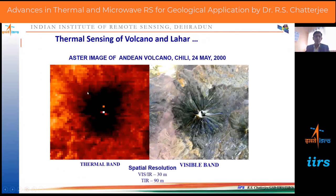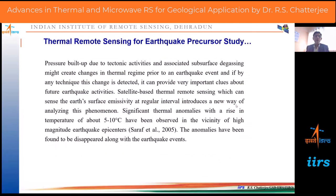Thermal sensing of volcanoes and lahars allows precise identification of the volcanic vent, high temperature points, volcanic cone, and lava flow areas. For earthquake studies, thermal sensing can be used as a precursor thermal anomaly. It has been observed that just before an earthquake — a few days prior — the temperature of the Earth's surface very near the epicenter increases by 5 to 10 degrees Celsius. This has been observed in many major earthquakes, not just one or two. For low magnitude earthquakes it may not be detectable, but for high magnitude earthquakes the 5–10 degree thermal precursor is prominent.